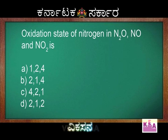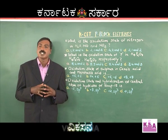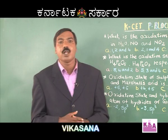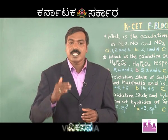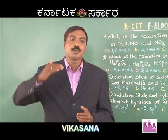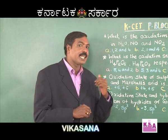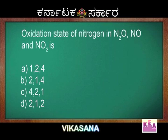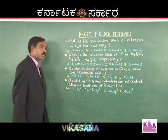The first question: what is the oxidation state of nitrogen in N₂O, NO, and NO₂? You studied redox reactions in first year PUC and how to calculate oxidation state. The key tip here is that nitrogen, the first element of group 15, has an oxidation state ranging from minus 3 to plus 5, with the highest being plus 5. Let me work this numerical. For N₂O, the unknown is nitrogen.